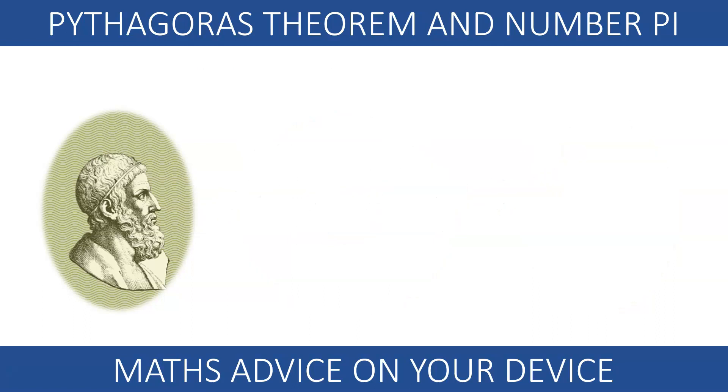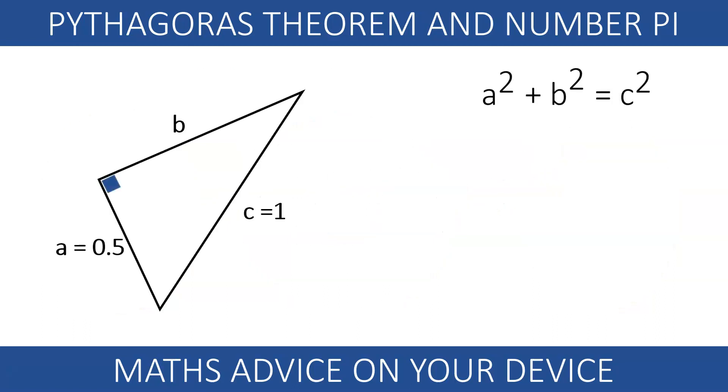Remember Pythagoras' theory? To find any missing side in a right-angled triangle, we need the other two sides. For example, in this triangle the hypotenuse is 1 and one of the other legs is 0.5. To find the other leg, we substitute the values and find b by taking the square root.